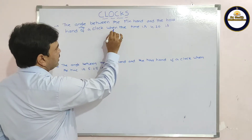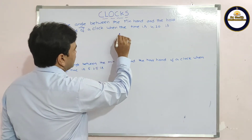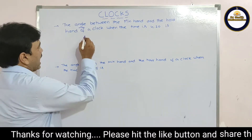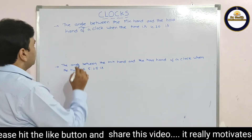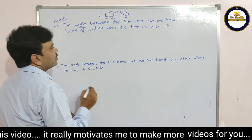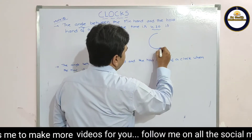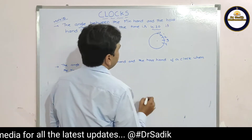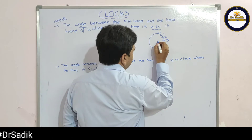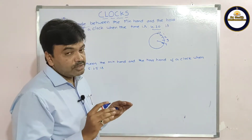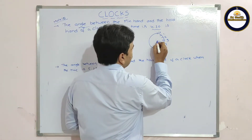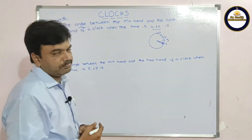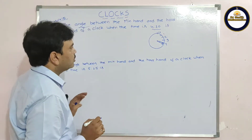The angle between the minute and the hour hand of a clock when the time is 4:20. So far we were finding time, but now we are finding angle. This is another model — Model 3. What is the time here? 4:20. This is 12, 1, 2, 3, 4. Where is the minute hand at 4:20? The minute hand is at 4. We are finding this angle.